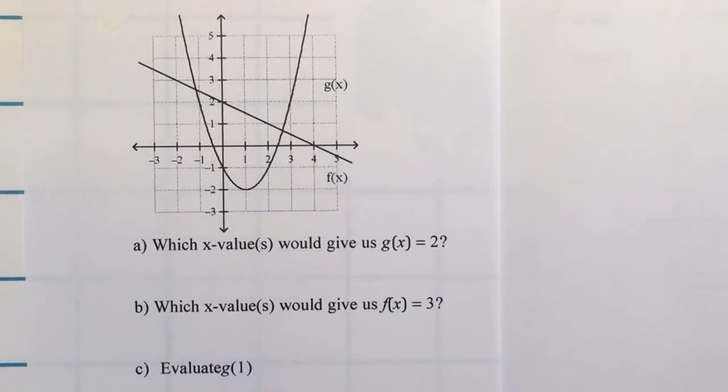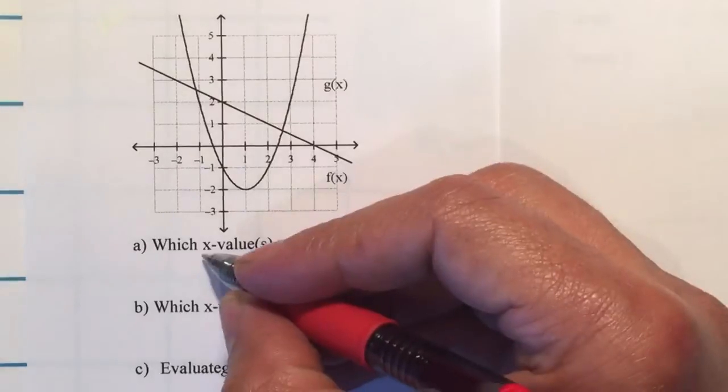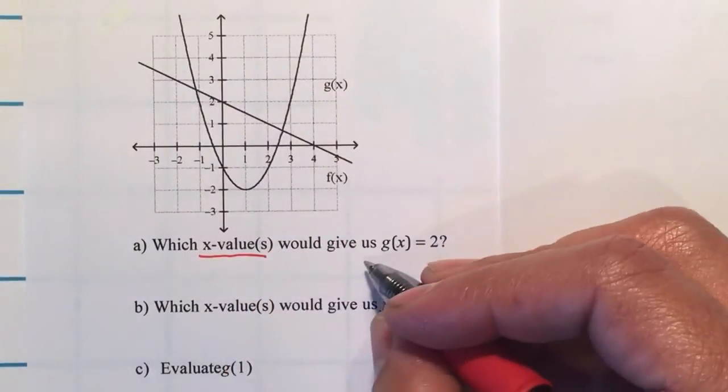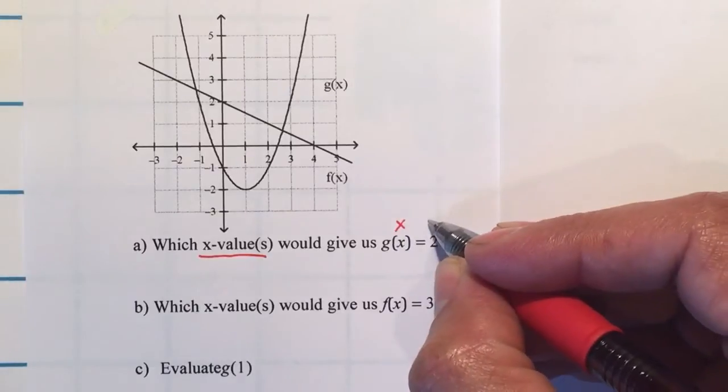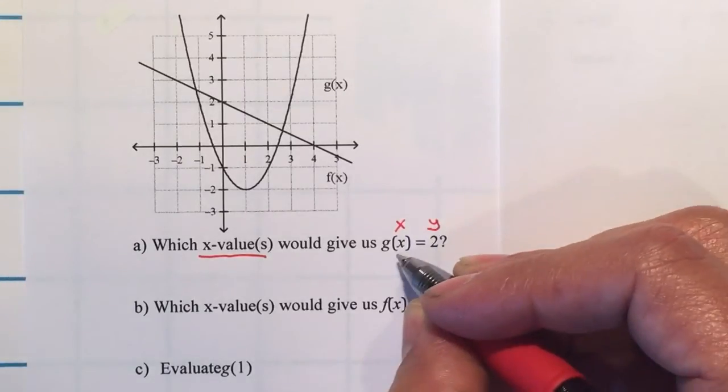They're asking you which x values, so we're looking for an x value, will give us g of x equal to 2. This is your x and they're giving us the y. So we're looking for x.